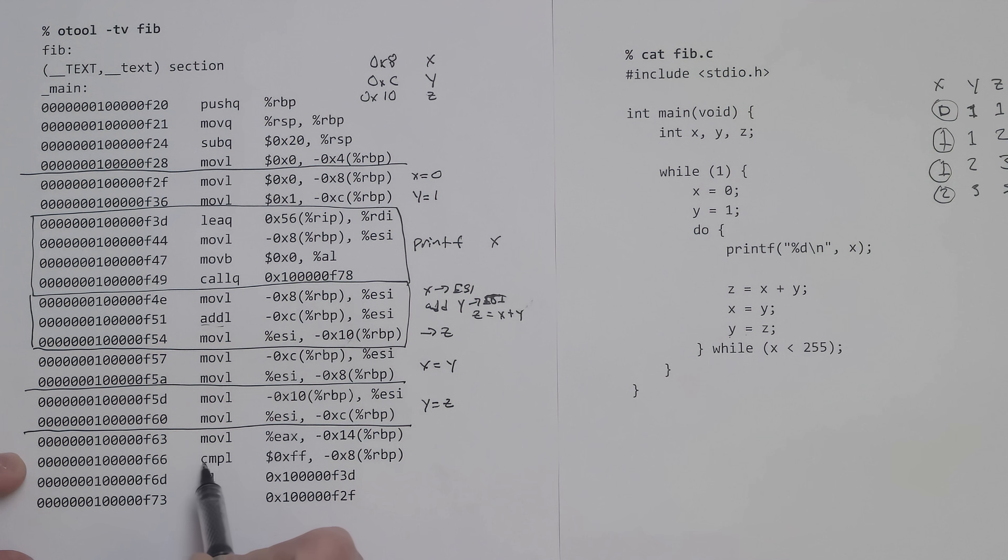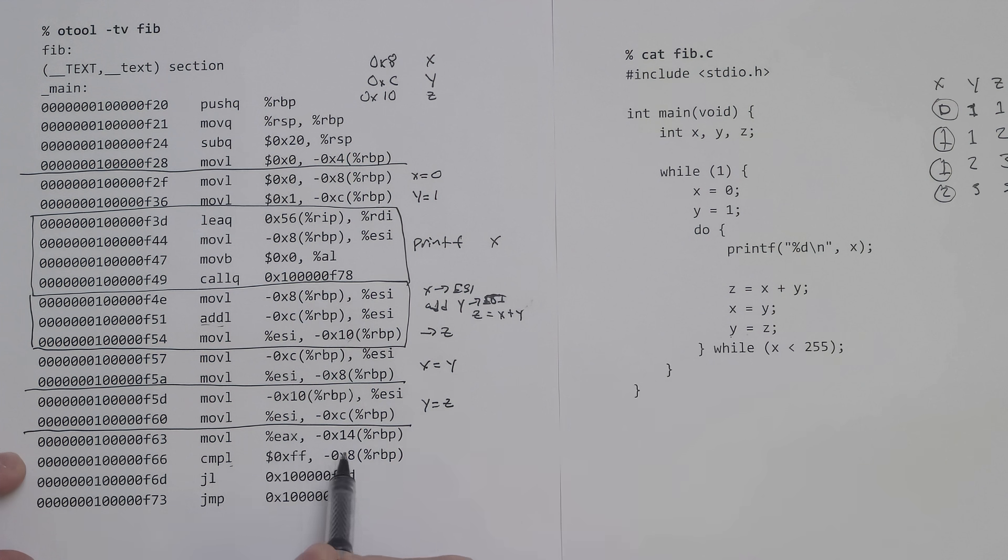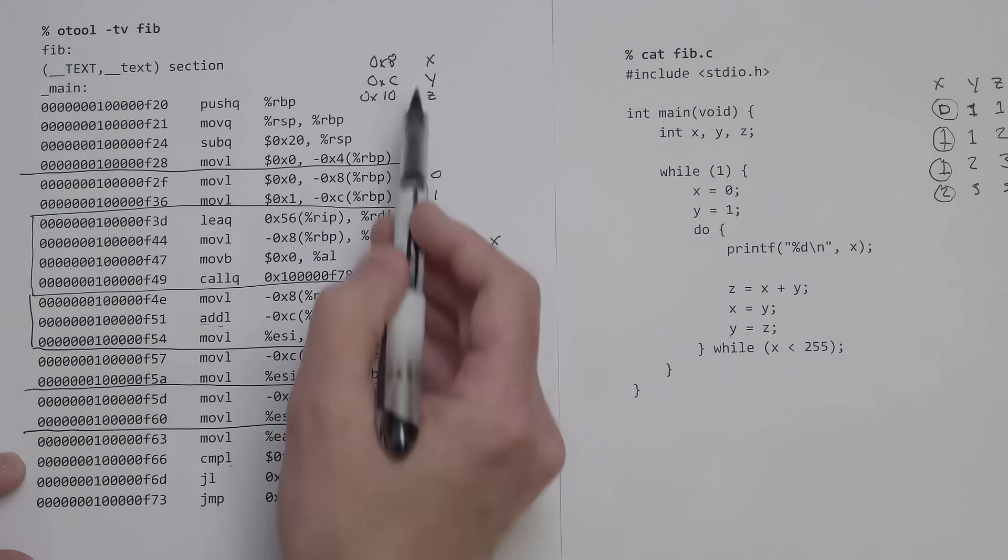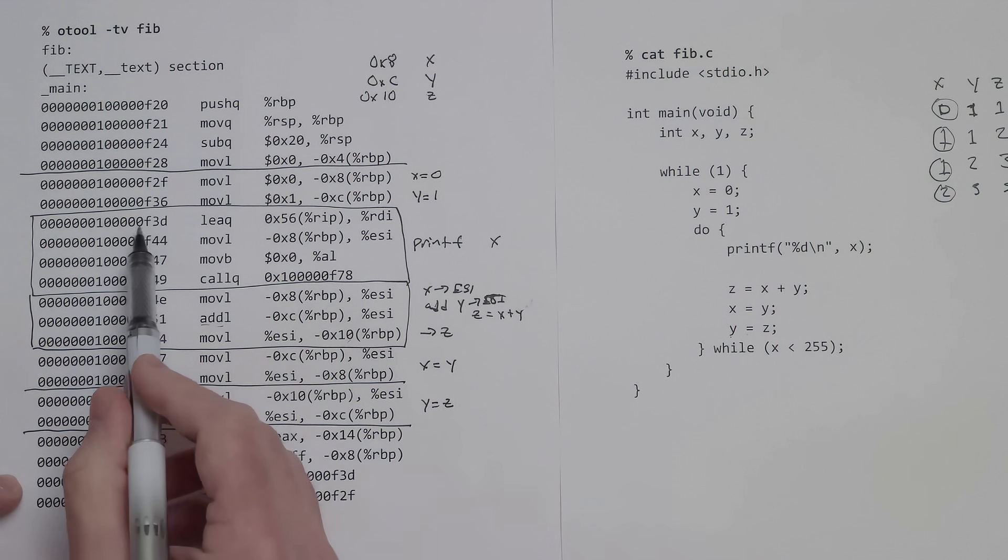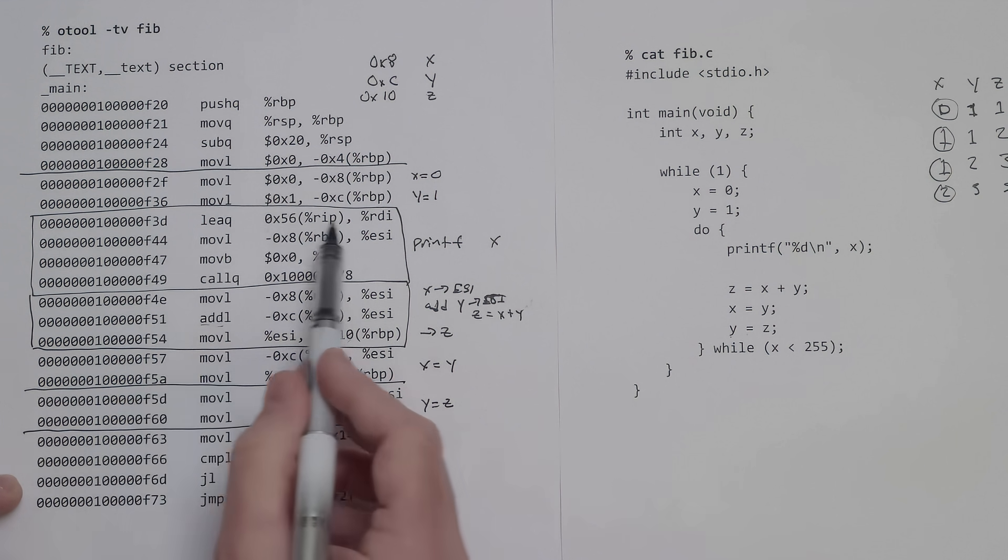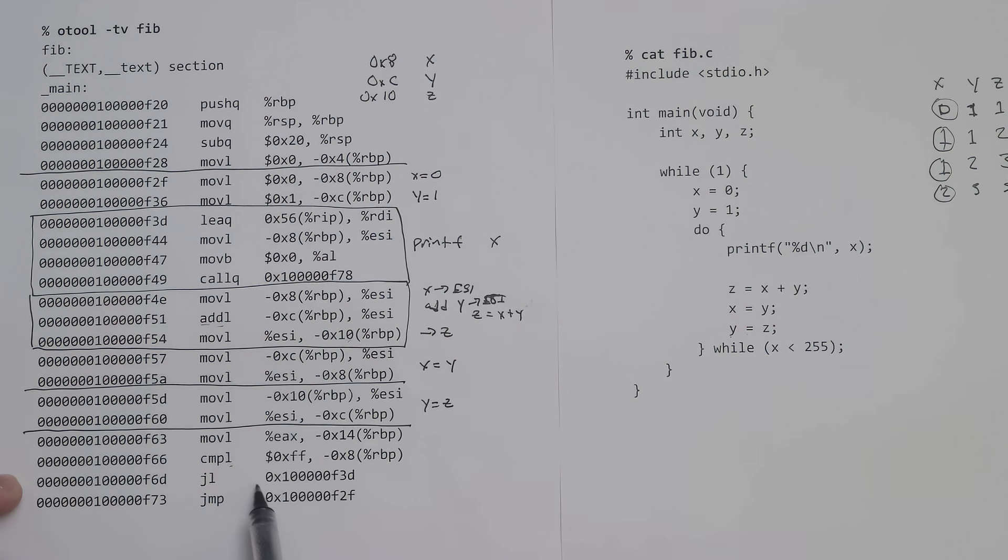After this line, we do this comparison. We're comparing 0xff, which is the hexadecimal representation of 255, to what's in memory location 0x8, which is x. We're saying jump if less than. The jump if less than takes us to address f3d, which is up here, the first statement of our printf.